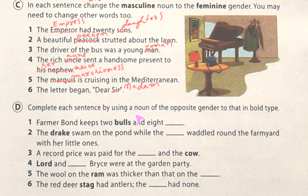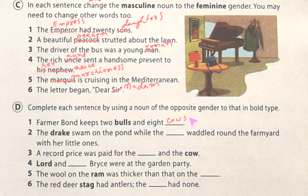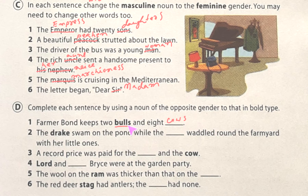Exercise D: complete each sentence by using a noun of the opposite gender to that in bold type. 'Farmer Bond keeps two bulls and eight ___.' Bulls is in bold, so its opposite is cows. The same approach applies to all the remaining sentences.